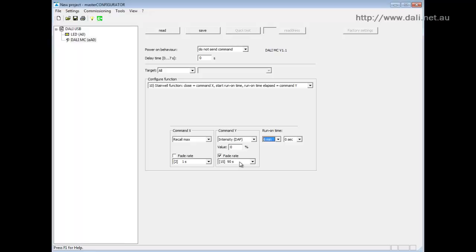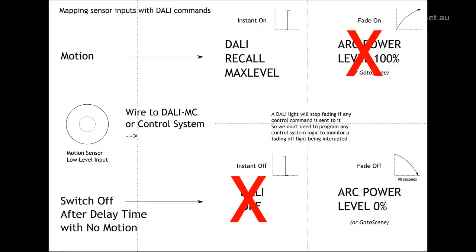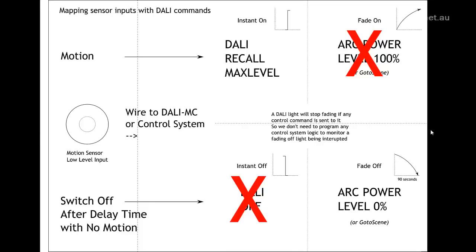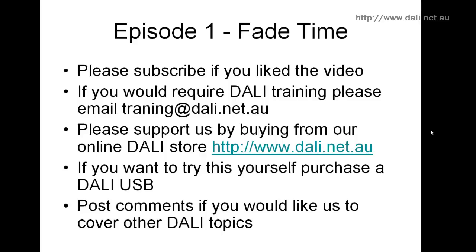That's a really nice effect. And if the lights are fading and someone moves — because the sensor didn't pick them up while they were sitting still — the recall max command will put the lights back on instantly. That's a good example of how knowing your fade rates can save you a lot of logic and programming time, and you can get some really nice effects out of DALI.